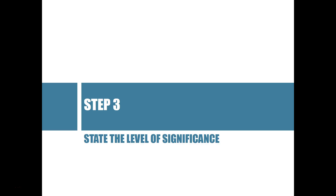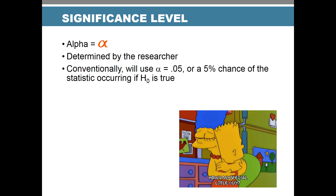Step three: state the level of significance, also called alpha. This is determined by the researcher — we set a threshold level beyond which we'll reject the null hypothesis. Conventionally we use 0.05, meaning there's a 5% chance of getting the result we got if the null hypothesis is true. That's a pretty low probability, indicating that if there truly was no effect, we'd rarely see this result.